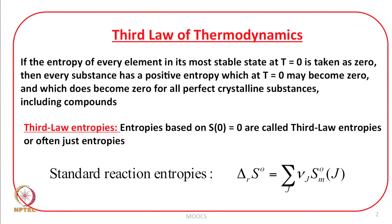How do we get standard reaction entropies? Standard reaction entropies can be calculated from the expression ΔS°ᵣ = Σⱼ νⱼ S°ₘ,ⱼ where j is the species j and νⱼ is the stoichiometric coefficient. Many books write the R subscript to signify reaction and many do not, so do not get confused.